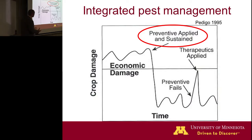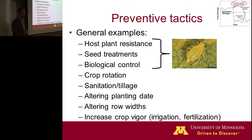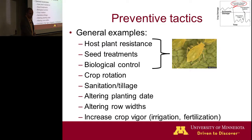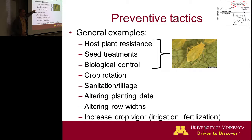Looking at some of the preventative management tactics currently in use, there's a pretty large list: pest resistant plants, biological control, crop rotation, changing planting dates or row widths. But for soybean aphid, the only ones that have been shown effective are resistant plants, the use of seed treatments, and biological control.